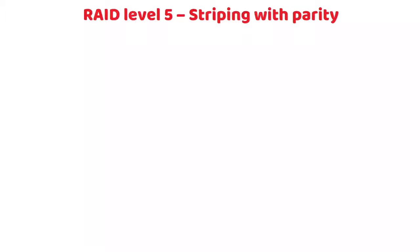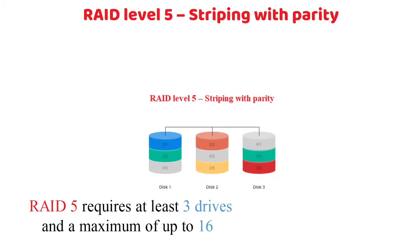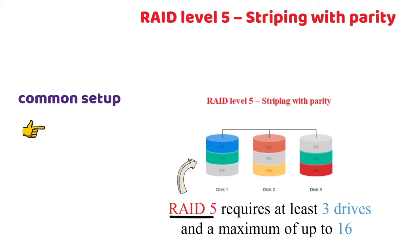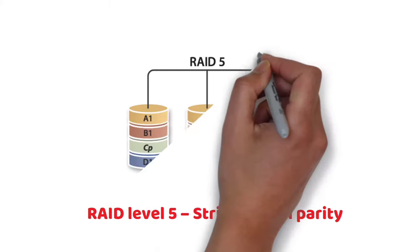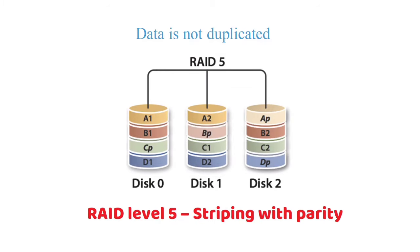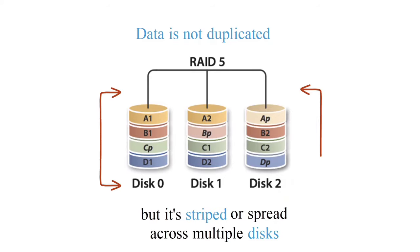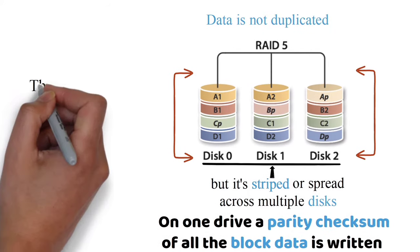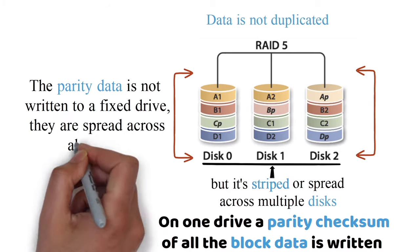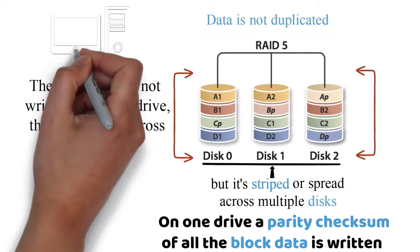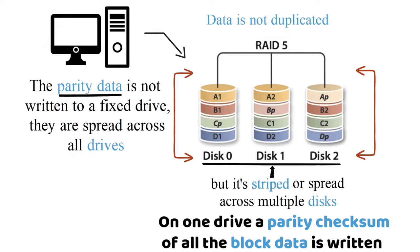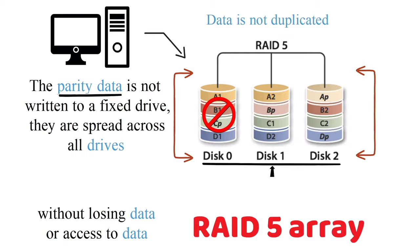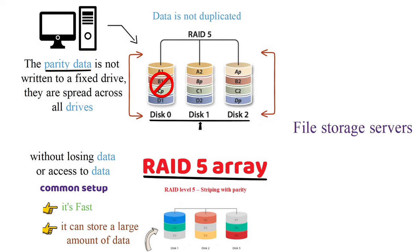RAID Level 5 — Striping with Parity. RAID 5 requires at least three drives and a maximum of up to 16. It is probably the most common setup because it's fast and can store a large amount of data. In a RAID 5 setup, data is not duplicated but striped across multiple disks. Data blocks are striped across the drives and on one drive a parity checksum of all the block data is written. The parity data is spread across all drives, allowing the computer to recalculate the data of one of the other data blocks if it's no longer available. A RAID 5 array can withstand a single drive failure without losing data. RAID 5 is ideal for file storage servers and application servers.